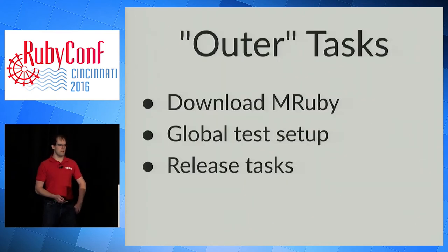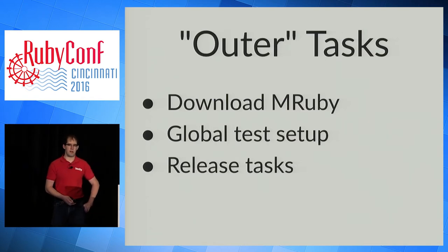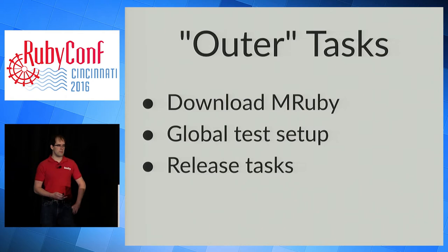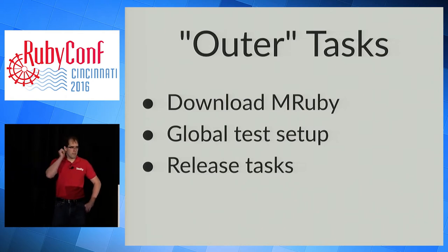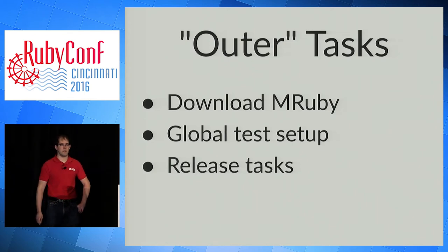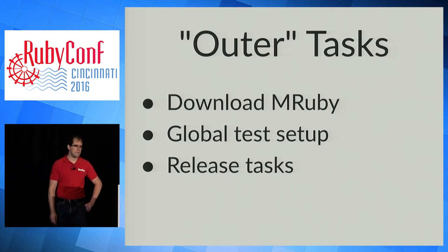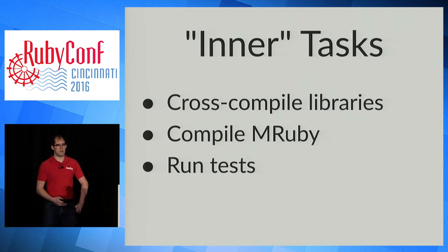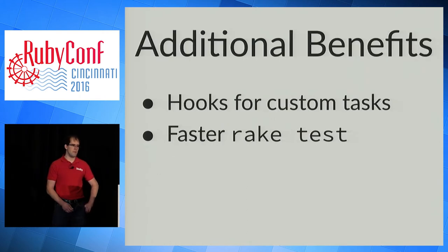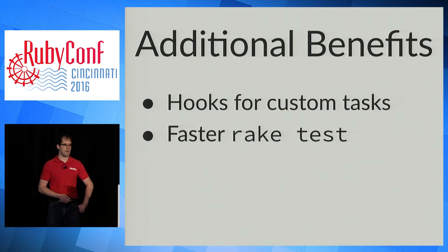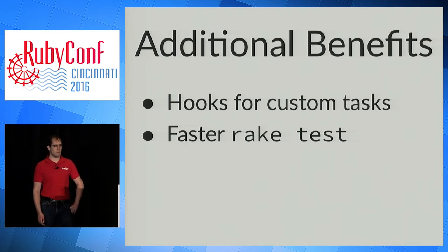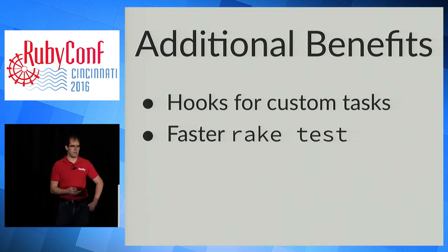Since the outer tasks don't need Docker, I use them to download and unpack MRuby to get it ready to compile. There's also some global test setup tasks, which I'll cover later, and release tasks to publish your finished MRuby executable. The inner tasks that run inside Docker cross-compile the C libraries you have configured, then invoke rake again to compile MRuby and run the tests. There are additional benefits: it's now much easier to add hooks for custom tasks since there are well-defined phases. I also made rake test faster by only compiling for the host platform when running tests — no need to build every platform when you can only run tests on the host Docker platform.